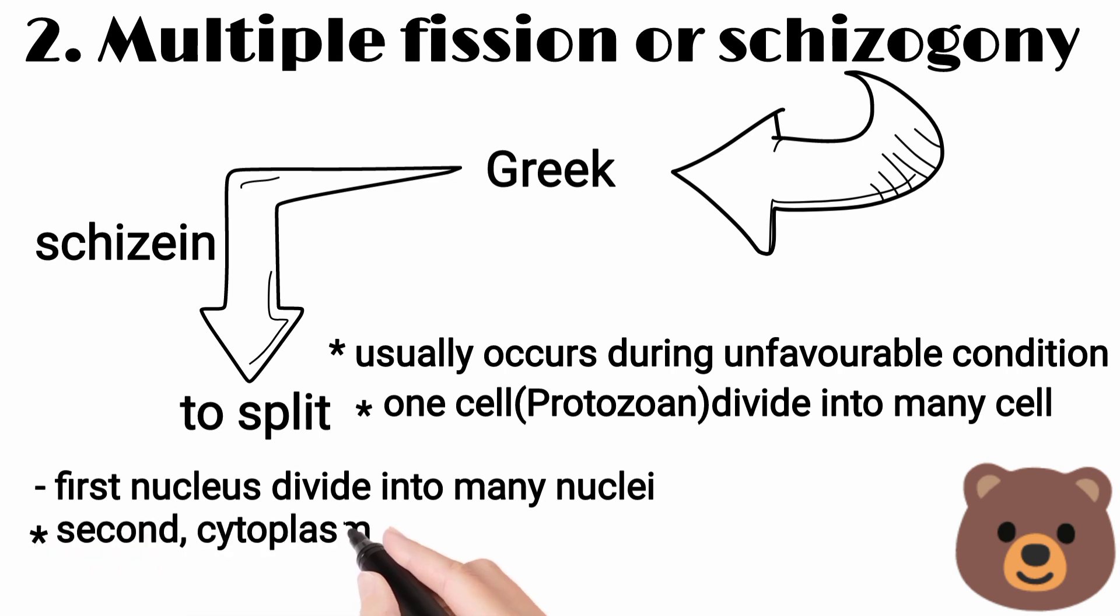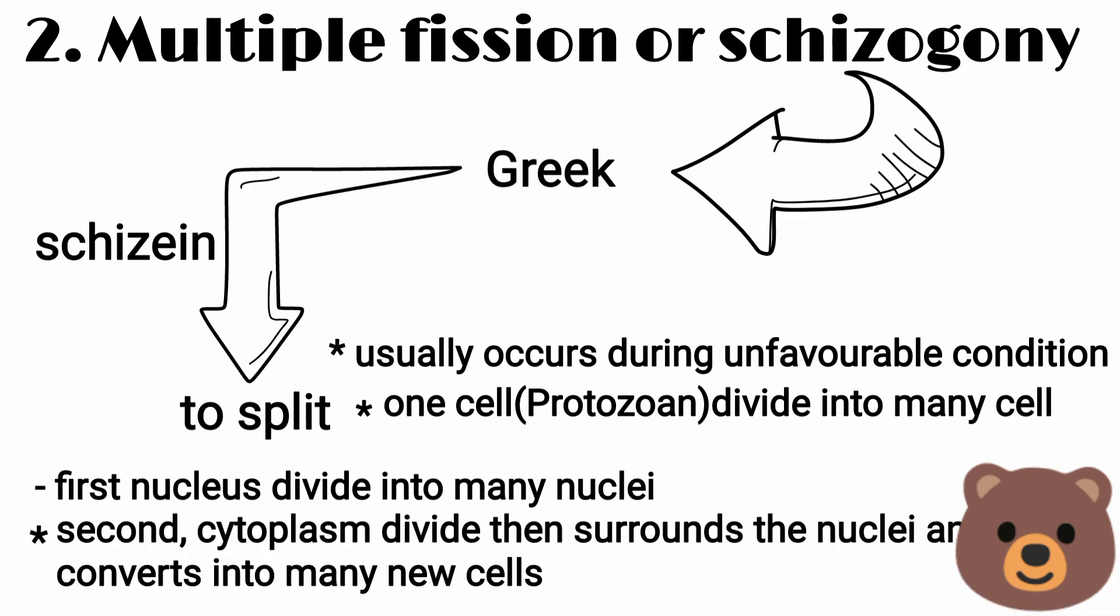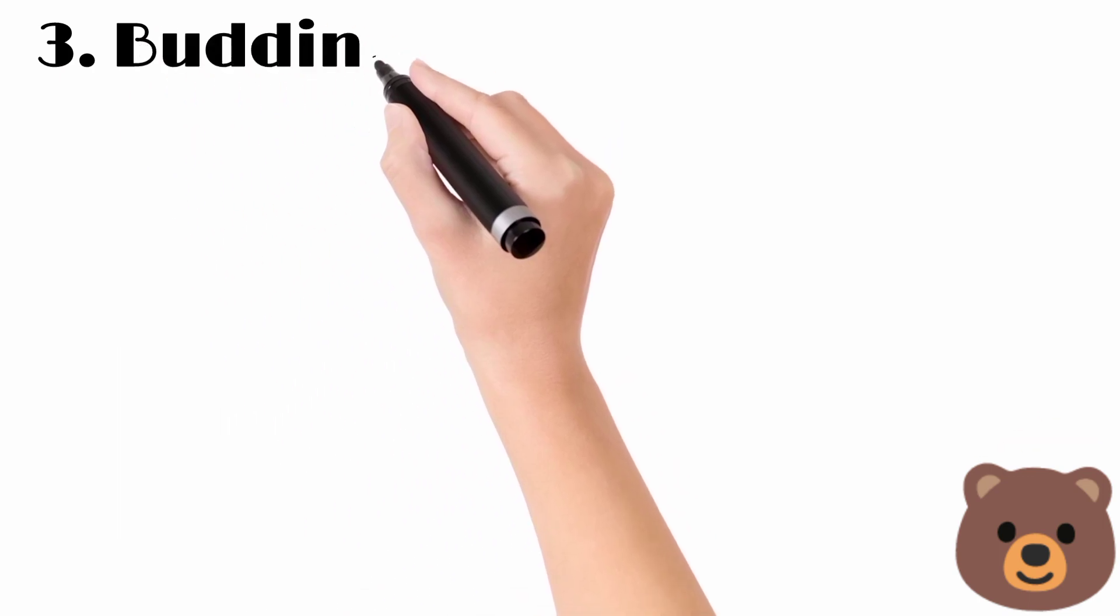First, the nucleus divides into many nuclei, then the cytoplasm divides.